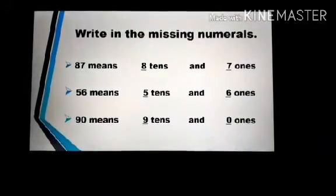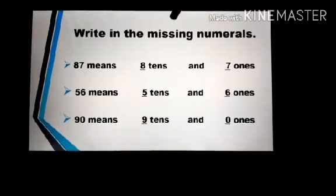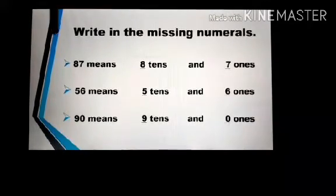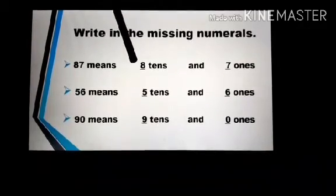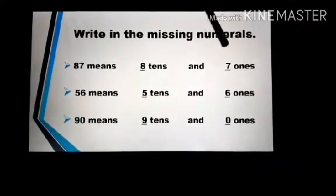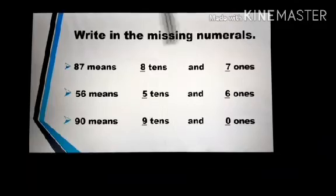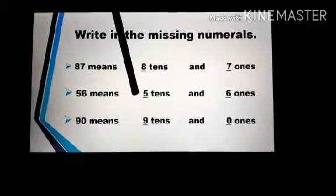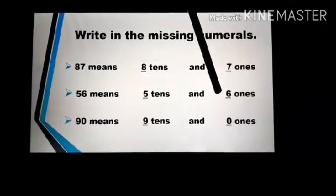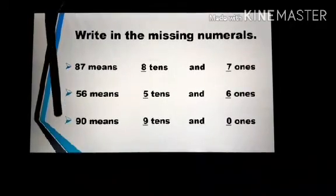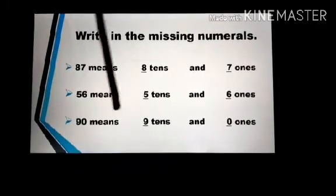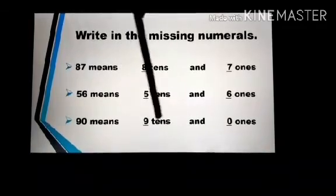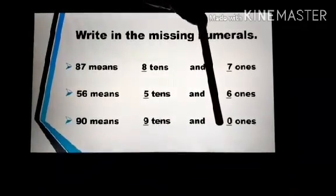Let's solve some more examples. Write in the missing numerals. 87 means 8 10s and 7 1s. 56 means 5 10s and 6 1s. 90 means 9 10s and 0 1s.